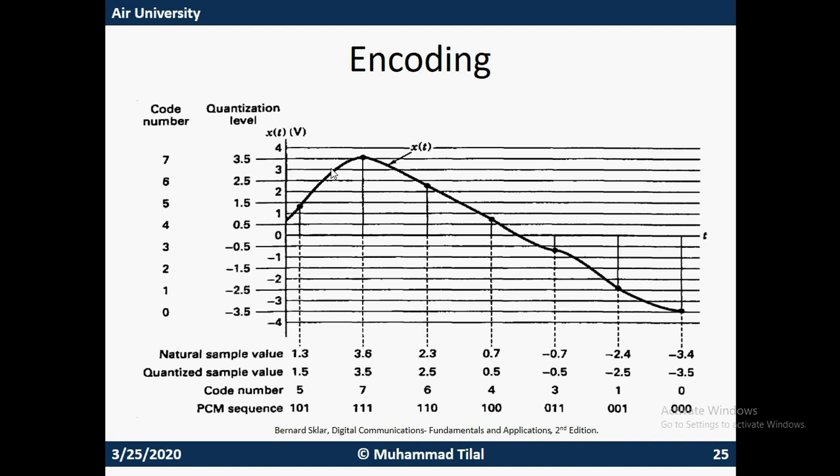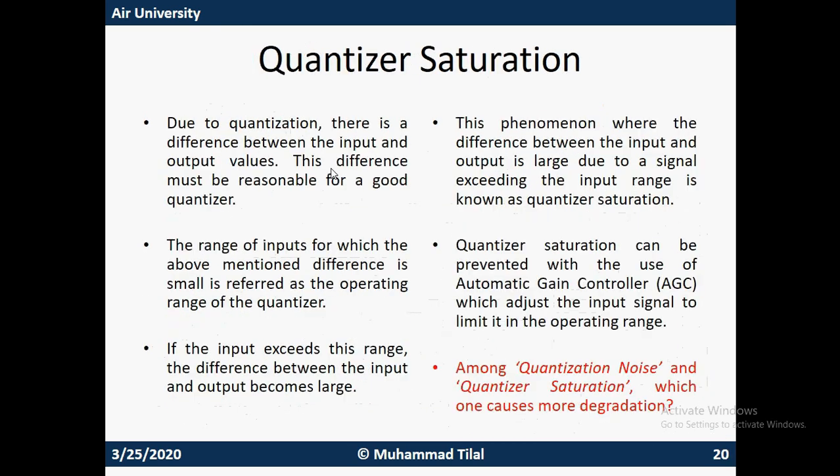In principle, when dealing with quantizer saturation, the input value is way beyond the active input range of the quantizer, causing a large amount of noise because it must be rounded off to the nearest possible value. Due to the quantizer's limitations, that nearest possible value is quite far from the original value. This condition is known as quantizer saturation.